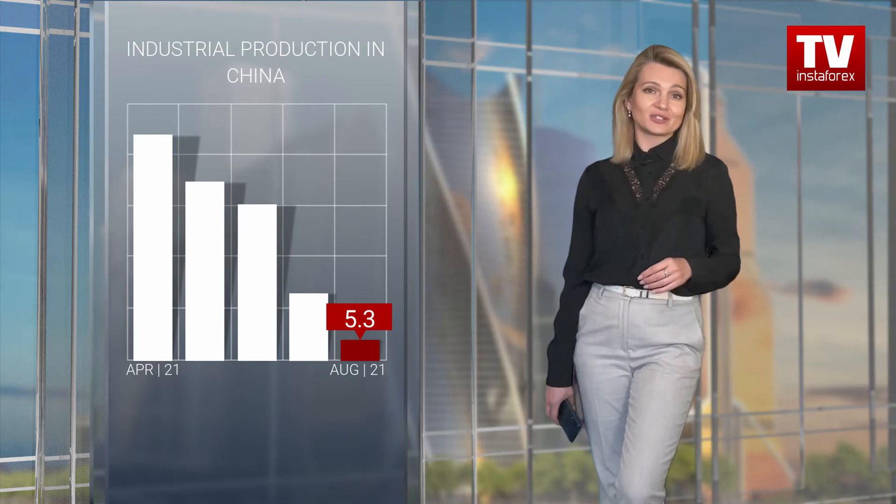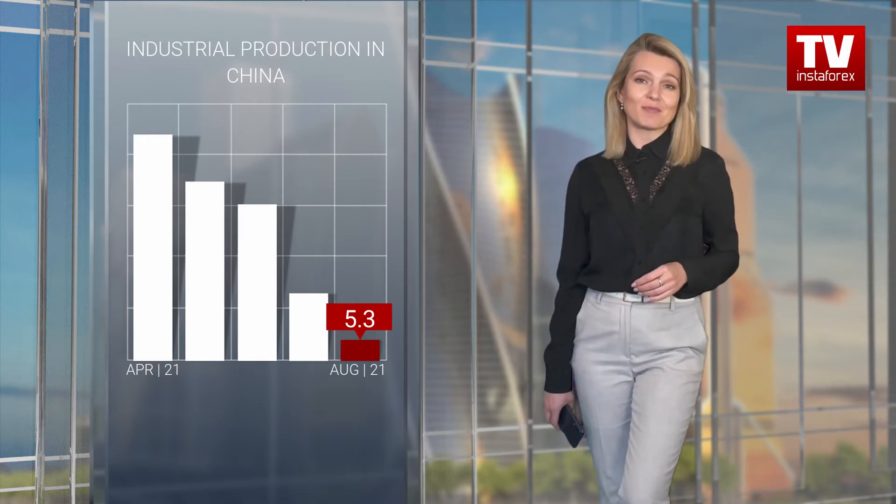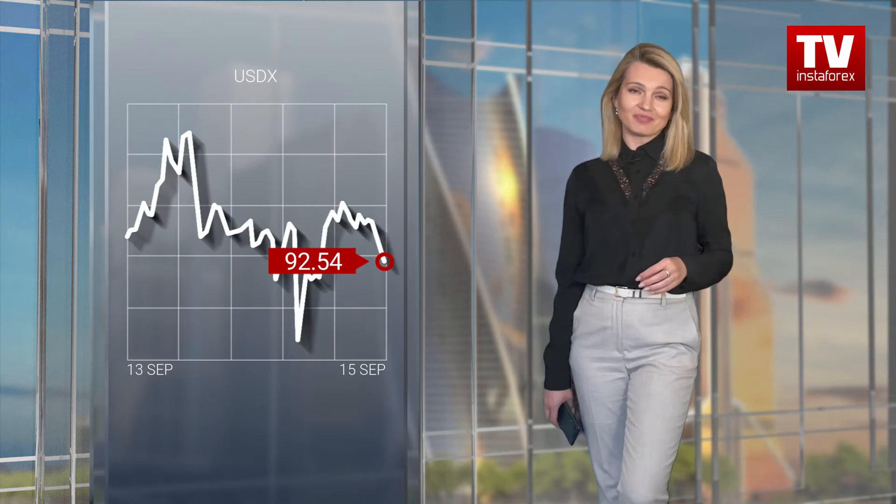These factors are sure to have an impact on financial markets as well. At the same time, the core US consumer prices rose at the slowest pace in six months in August, suggesting that inflation had probably peaked. It could remain high for some time amid persistent supply constraints. The US Labor Department said its consumer price index, excluding the volatile food and energy components, rose by 0.1% last month — the smallest gain since February.